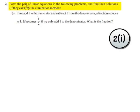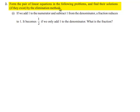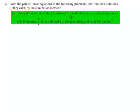Coming to the second problem: form the pair of linear equations in the following problems and find their solution, if they exist, by the elimination method. The first bit given is: if we add 1 to the numerator and subtract 1 from the denominator, a fraction reduces to 1. It becomes 1 by 2 if we only add 1 to the denominator. What is that fraction? Let us see the solution for this problem.